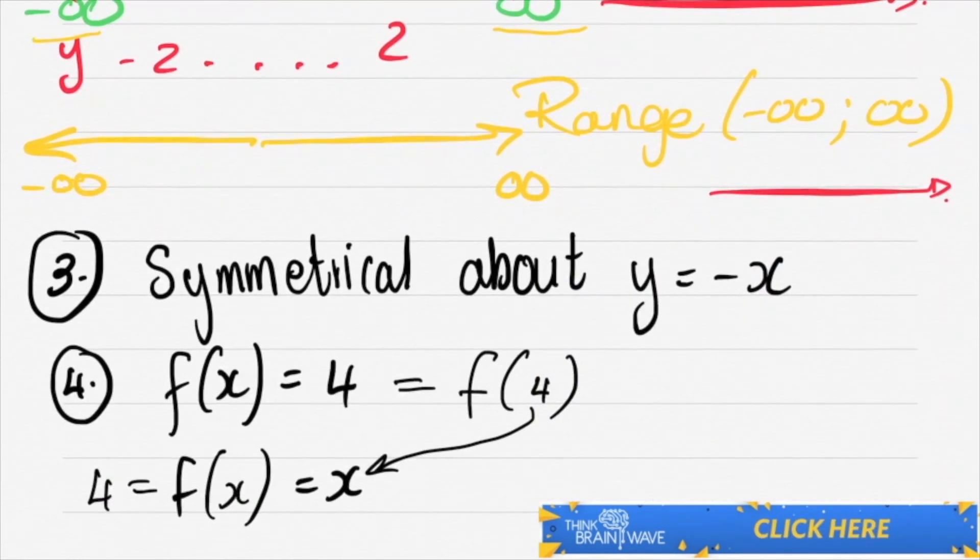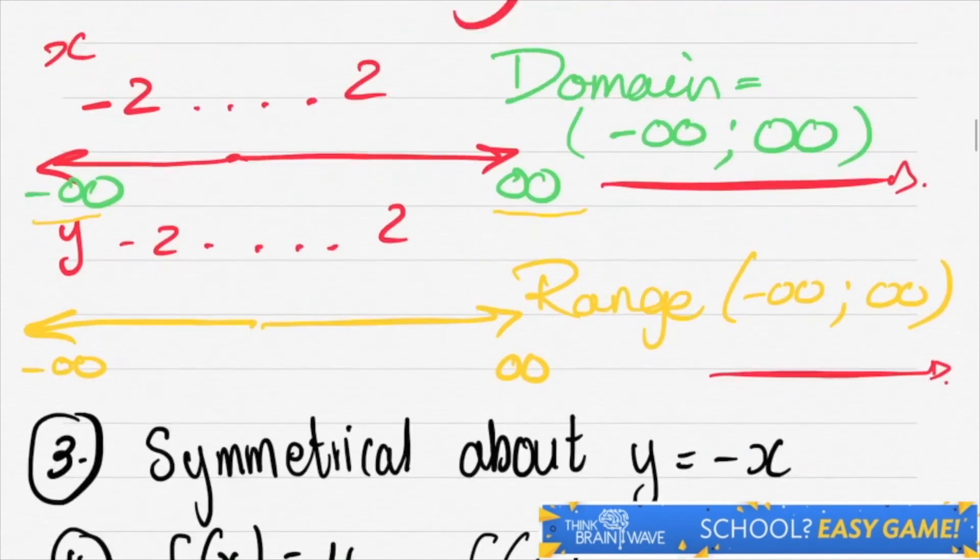So if it's symmetrical, we need to know how it is symmetrical. Let's look at this. It says symmetrical about the y is equal to negative x line. Let's scroll up.